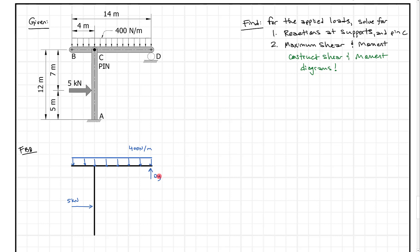At A, we have a rigid or fixed base, which gives us three reactions: AY, AX (drawn going this way), and a moment. We need to guess which direction the moment goes. Since the five kilonewton force is pushing in a clockwise sense, I'm going to assume the moment at A goes counterclockwise.